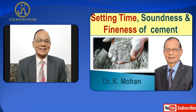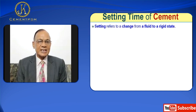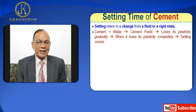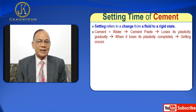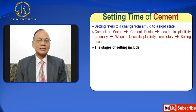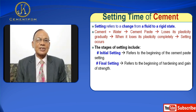Mr. Singh, I will first discuss setting time. Setting refers to a change from a fluid to a rigidity — that is, cement plus water gives you cement paste. Gradually the plasticity of this paste is lost. When it loses its plasticity completely, then we say that setting has happened. The stages of setting include first initial setting, which refers to the beginning of the cement paste setting. Then we have final setting, which refers to the beginning of hardening and gain of strength.